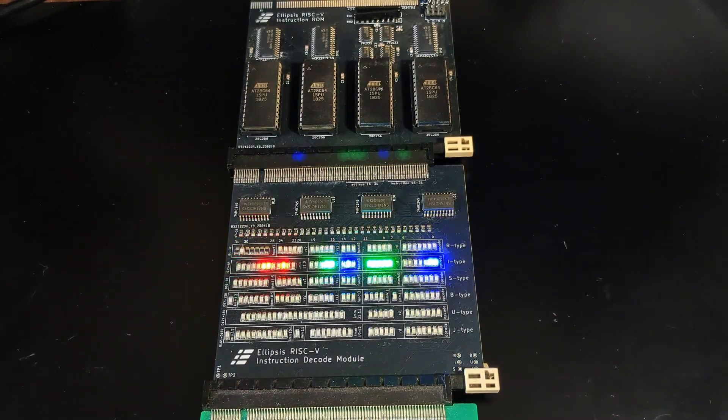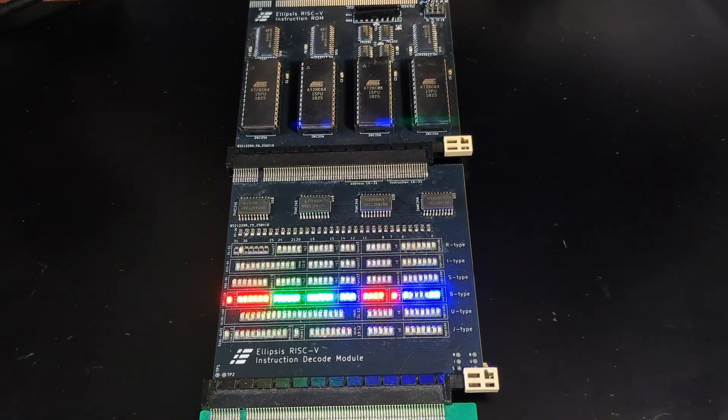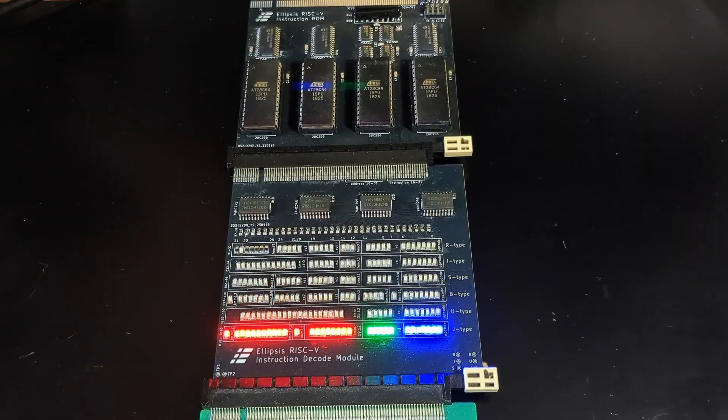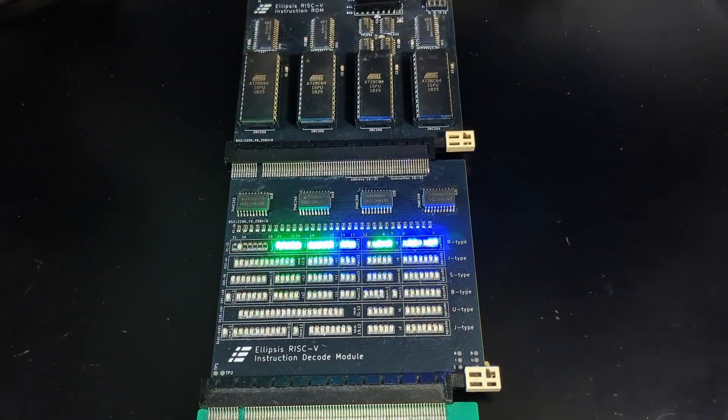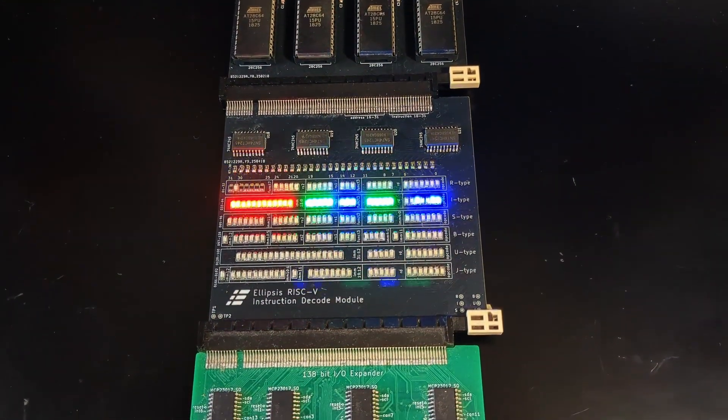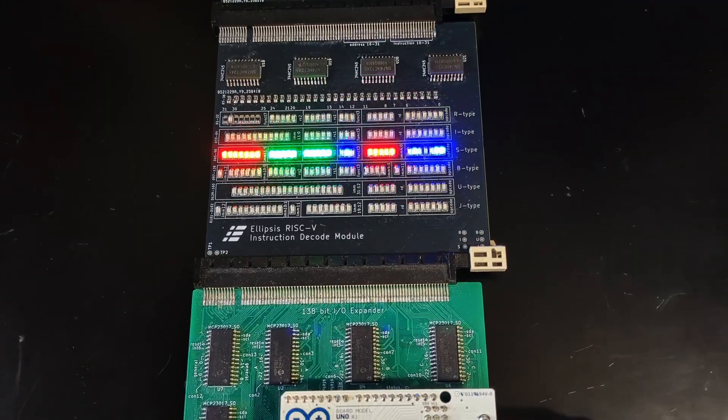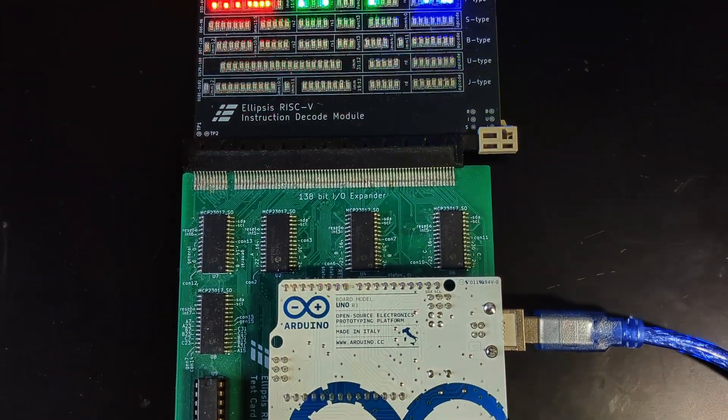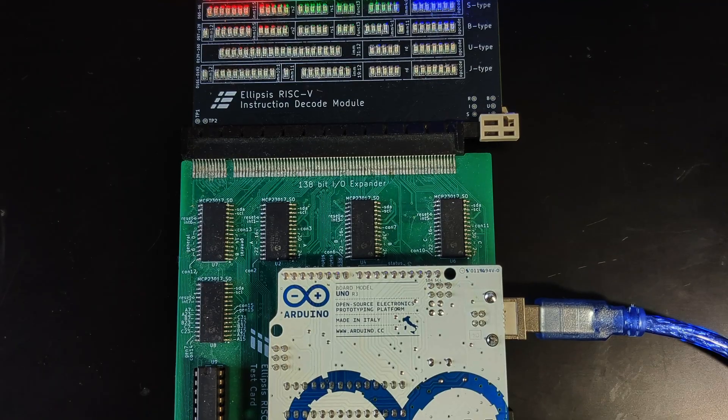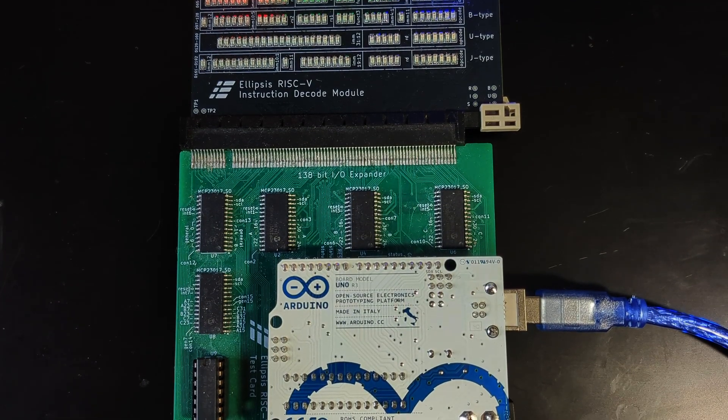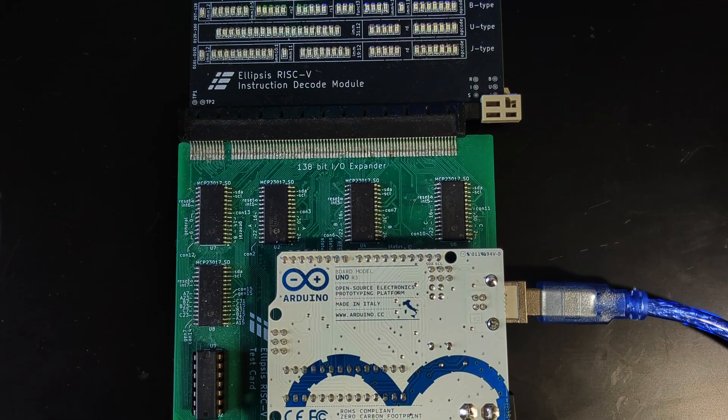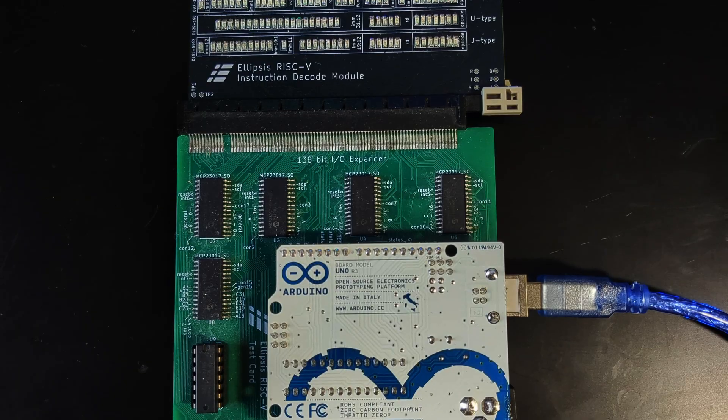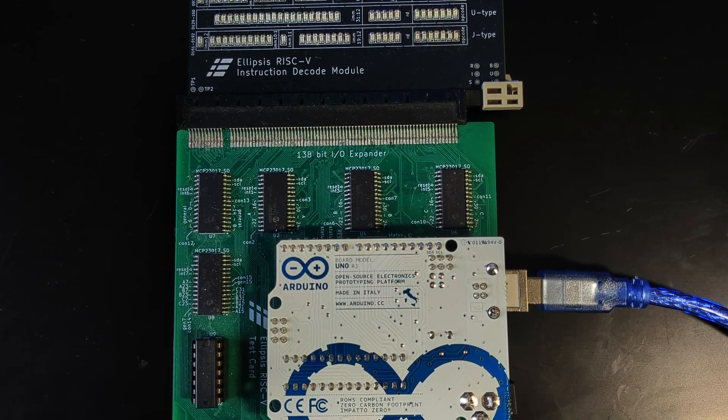In the previous couple of videos we have developed the instruction ROM module which reads an instruction and feeds it into the decode module. The decode module then breaks down the instruction into its components. The timing of all this is currently being driven by the test module using an Arduino program. In this video we'll design a clock circuit that will drive the timing of the CPU, removing one more dependency on the Arduino.